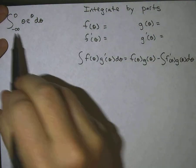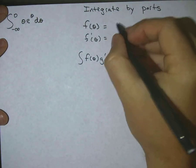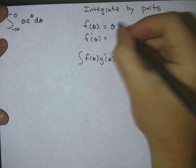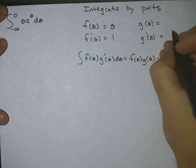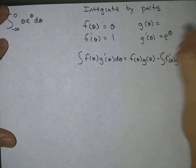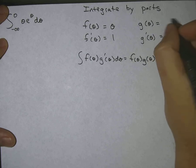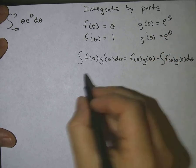I'm going to choose my f to be theta, so my f prime will be one. My g prime would be e to the theta, which would make my g also e to the theta.